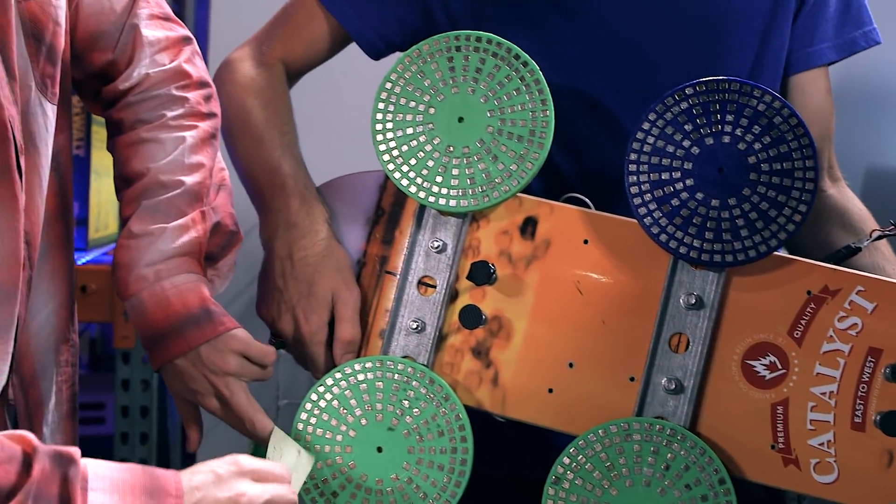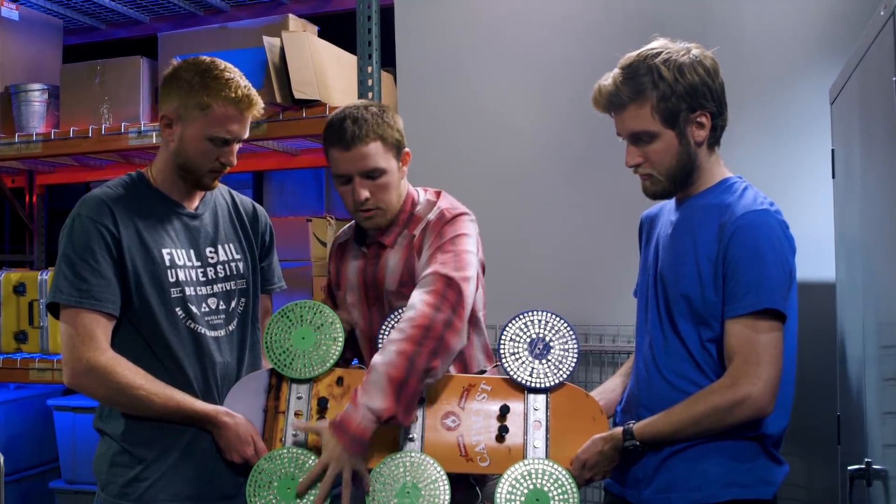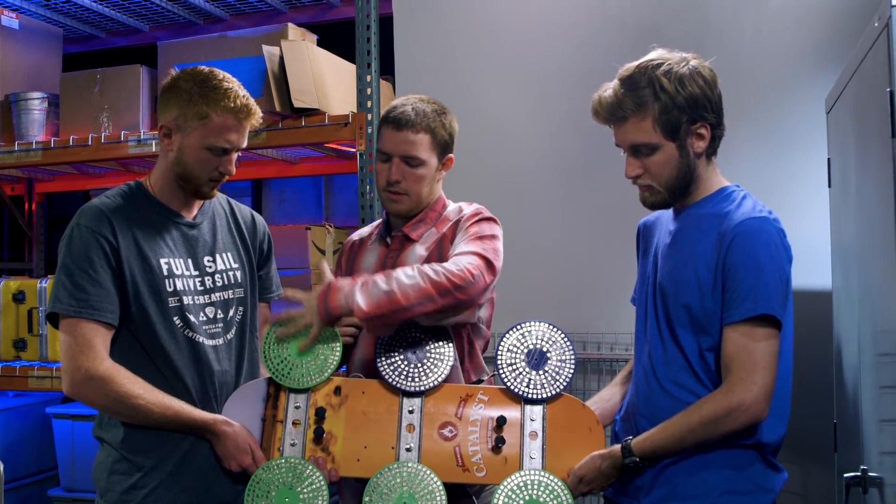All of these are set up in what's called a counter torque configuration. So these all spin one way, these all spin the exact opposite, which will equal each other out, so we won't see this thing just trying to spin around in a circle.